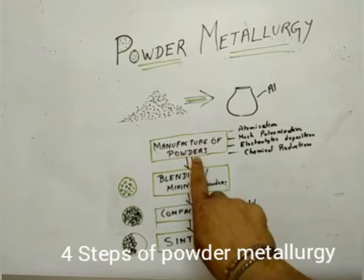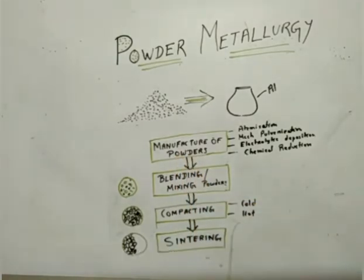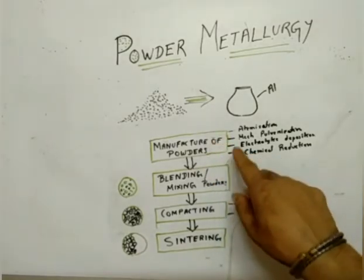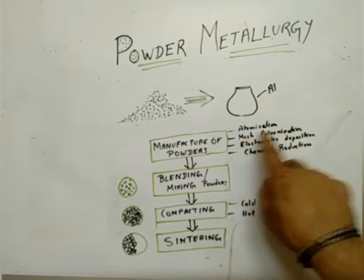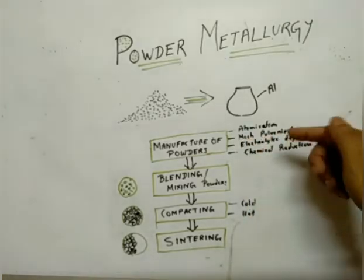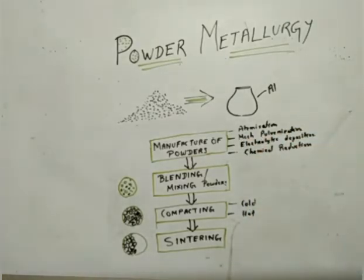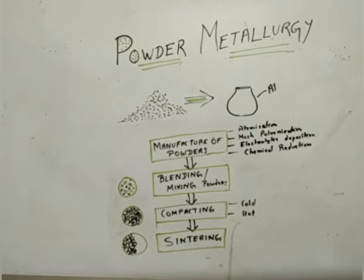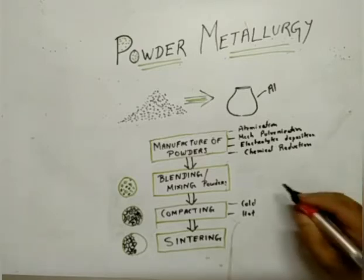Powder metallurgy starts with the manufacturing of metal powders — this is the first step. Suppose I want to create a finished product of aluminum, so I have to create aluminum powders. For creating metallic powders we have different types of methods; here I have listed four important ones. The first is atomization, which is nothing but forcing molten metal through an orifice, then using high-pressure gas or water to convert it into metallic powders.